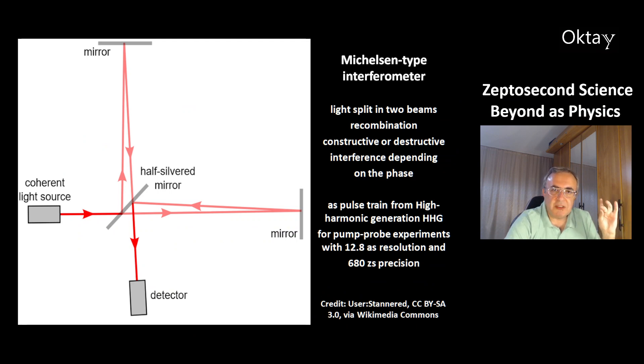This is a Michelson type interferometer. Light is split in two beams by this half-silvered mirror. One part goes this way, the other one goes that way. Then they are recombined. And you get an interference. And this interference can be constructive or destructive, depending on the phase. An attosecond pulse train from High Harmonic Generation, HHG, was used for pump probe experiments with 12.8 attosecond resolution and 680 zeptoseconds precision.